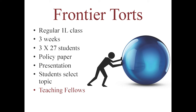The first course I want to mention is Frontier Torts — a regular 1L first-year law school class with 80 students who are randomly assigned. Most of it is a regular course, but for three weeks at the end of the semester students divide into teams of 27 and produce a policy paper on a topic they've selected, plus a recorded class presentation. They select the topic based on problems they want to work on. This requires teaching fellows — three of them — who work closely with each team, without whom this model wouldn't work. That's an example of a small segment of an otherwise more traditional course.